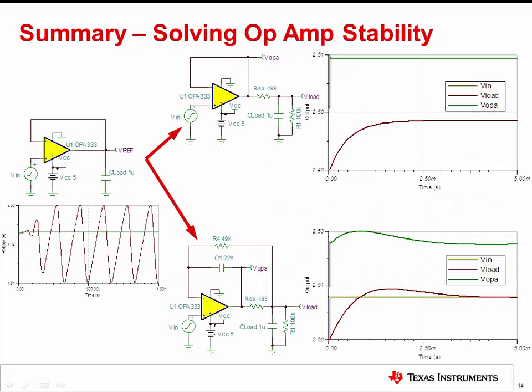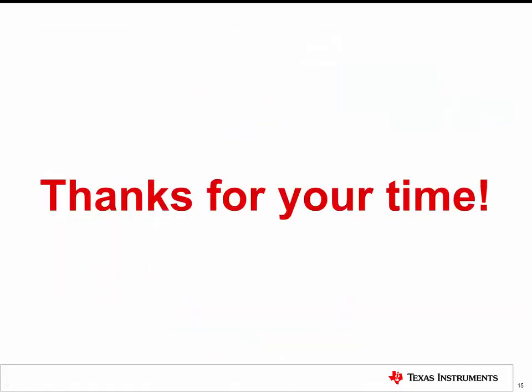In summary, this video described the R-ISO plus dual feedback method for stability compensation and showed its advantage of DC accuracy compared to the R-ISO method. A new method for performing open loop analysis on multiple feedback circuits was also shown. While both the R-ISO and R-ISO plus dual feedback compensation methods are effective, there are many other methods that can also be used. Stay tuned for future videos which will detail more compensation methods better suited for certain applications. Thanks for your time. Please try the quiz to check your understanding of this video's content.